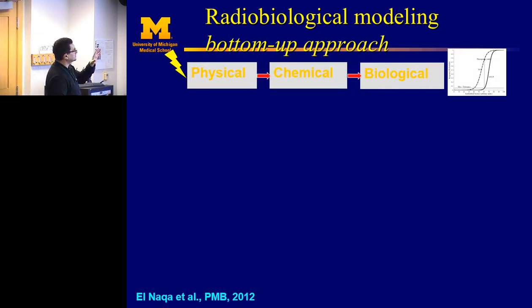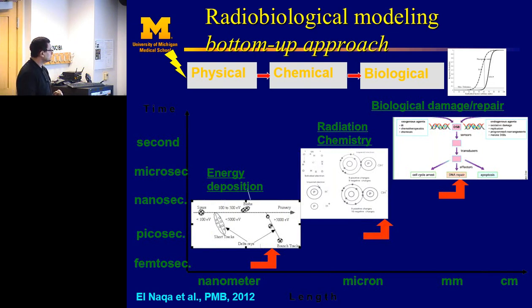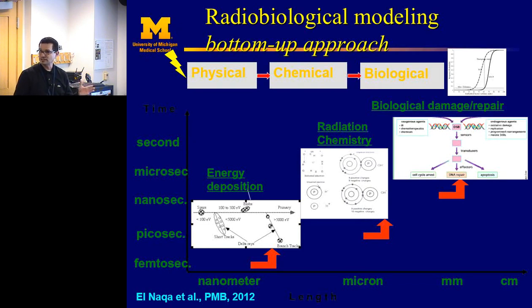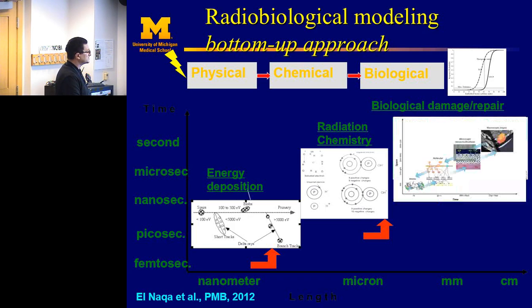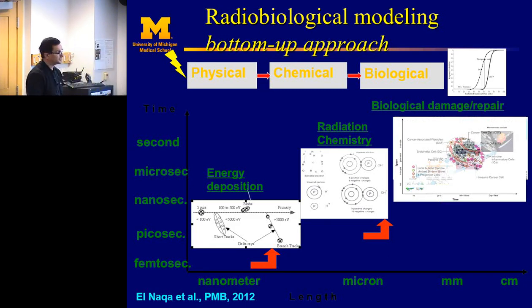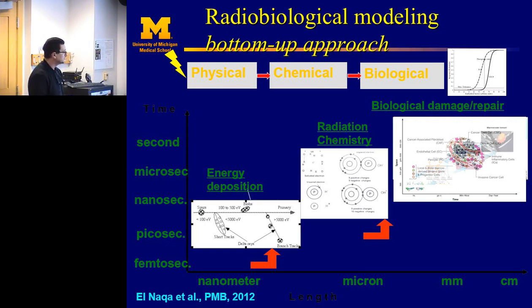The bottom-up approach starts with physical interaction, then chemical interaction, then biological interaction. The time scale and spatial scale differ: the physical interaction — the deposition of radiation — happens in femtoseconds on a nanoscale. Chemistry effects, primarily ionization and excitation, happen in the microsecond range. Then biology — damage and repair — operates on a large timescale and large spatial scale, and it is multiscale: from molecular, to cellular, to tissue, and organ levels. The cells are a combination of heterogeneous tumor tissue — tumor cells (stem cells or differentiated cells), normal tissue, and infiltrated immune cells.